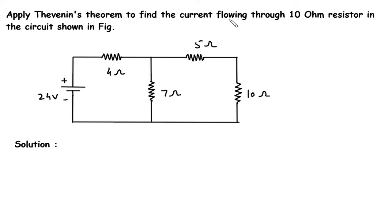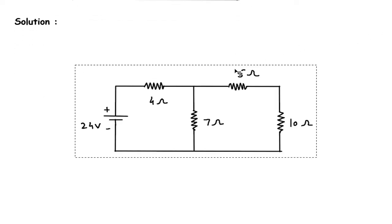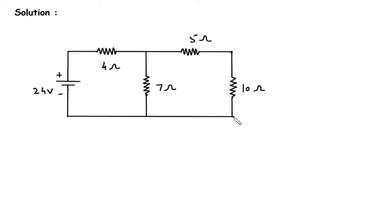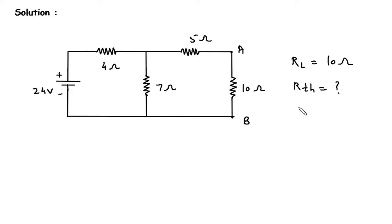Apply Thevenin's theorem to find the current flowing through the 10 ohm resistor in the circuit shown in the figure. Let's say this is terminal A and this is terminal B. RL is equal to 10 ohm. We have to find RTH and VTH — the Thevenin resistance and Thevenin's voltage.